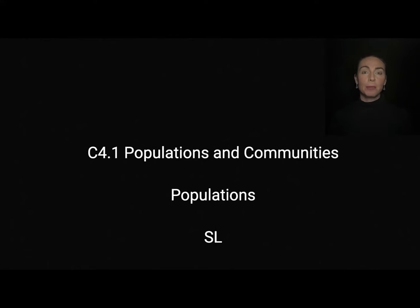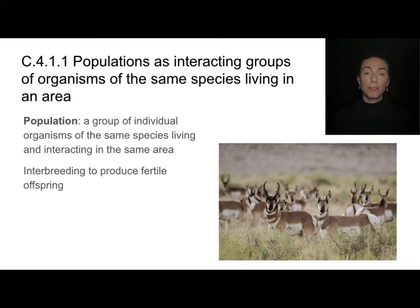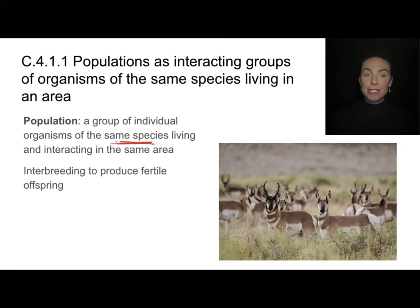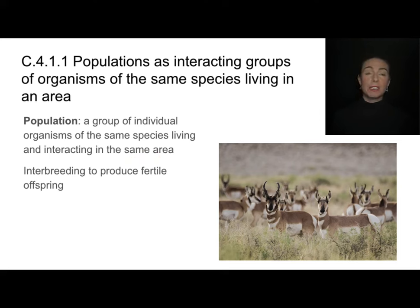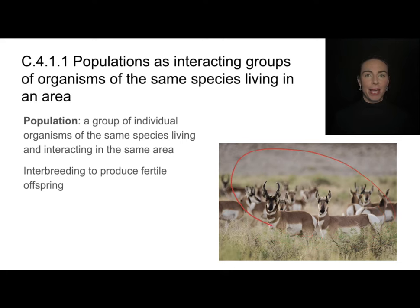In this video we'll be discussing populations — it's part of C4.1 on populations and communities, and this is all standard level or core content. When we refer to a population, we're talking about a group of individual organisms that are the same species, living and interacting in the same area. Species are individuals that can interbreed to produce fertile offspring. Here is a population of antelope — all the same species, living and interacting in the same area.